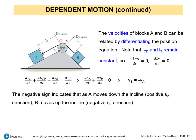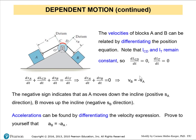The negative sign indicates that when A moves up, SB moves down. Remember that both coordinates are defined as positive downward. So if SA is positive going down, negative SA means going up, and positive SB means going down. Therefore, if block A goes up, SA is negative, and block B moves down, giving a positive SB. If we differentiate the velocity expression, we can also prove that the acceleration of B equals negative the acceleration of A.